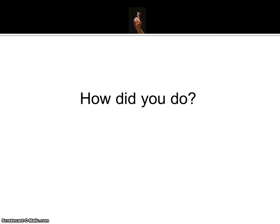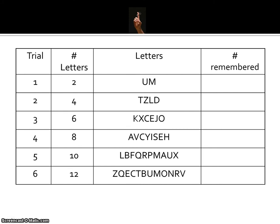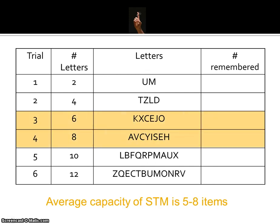How did you do? Let's have a look at all of the letters — the answers. In the first trial there were just two letters, hopefully most of you were able to remember those. In the second trial we had four letters, the third trial there were six, the fourth trial there were eight letters — that's probably where it started to get challenging. The fifth trial there were ten letters, and on the sixth trial there were twelve. The vast majority of people, the average person, would get anywhere between six to eight letters. Research showed us that the average capacity of short-term memory is somewhere between five to nine items, so you would expect the majority of people to fall within this middle category.